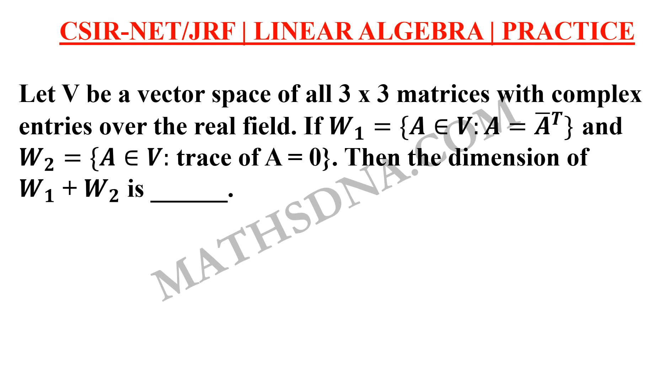Now one question for your practice from the topic of linear algebra. The question is: let V be a vector space of all 3×3 matrices with complex entries over the real field. If W₁ = {A ∈ V | A = Aᵀ} and W₂ = {A ∈ V | trace(A) = 0},